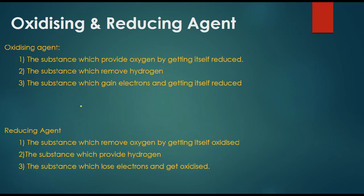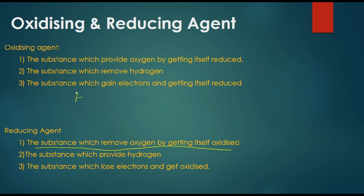Reducing agent: the substance which removes oxygen by getting itself oxidized. Zn plus Fe2O3 plus carbon monoxide giving Fe2O3 — we balance, then we have two. Iron and oxygen are balanced.